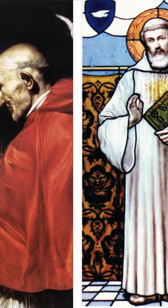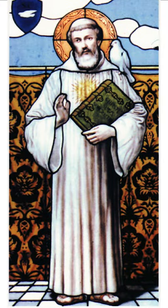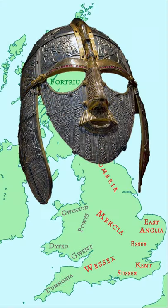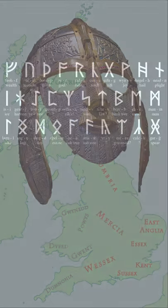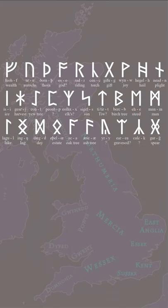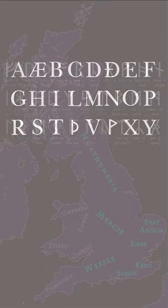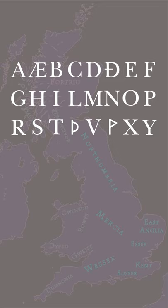Irish missionaries spread Catholicism to Anglo-Saxon Old English speakers and got the Anglo-Saxons to trade their runic alphabet for a modified Latin alphabet, with letters we don't use anymore and missing some we do use.